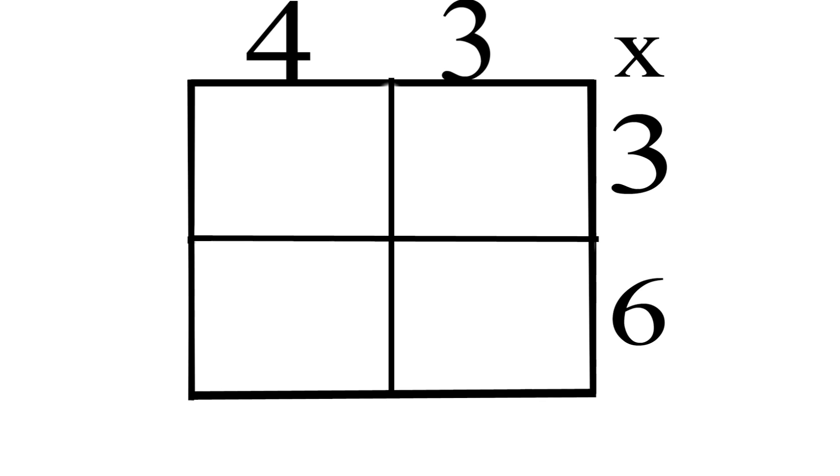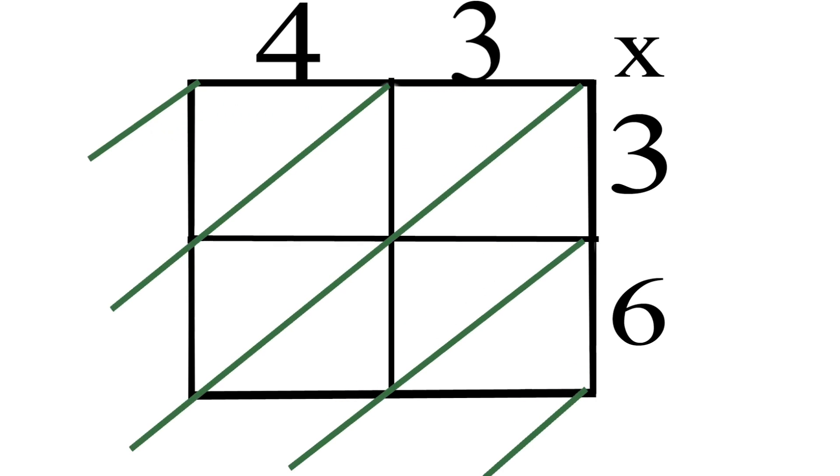draw lines that line up with each number. Next add the diagonal lines and make sure they go outside the box. Let's do four times three first. The answer is 12. The tens place goes on the top and the ones place goes on the bottom, so the one goes on top and the two goes on the bottom.